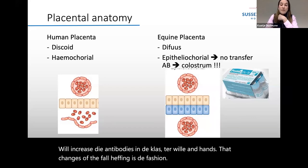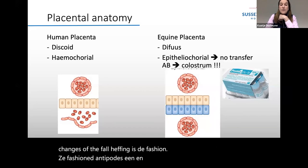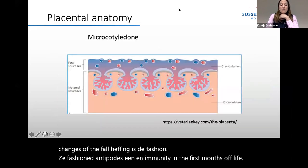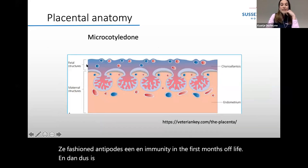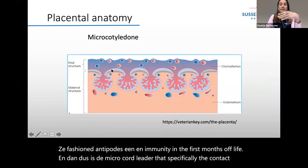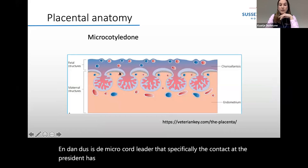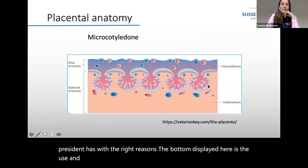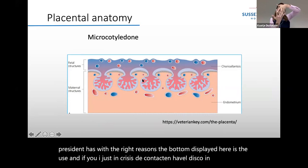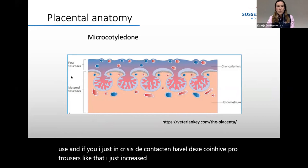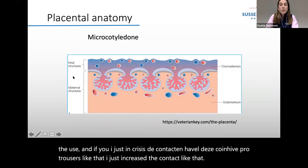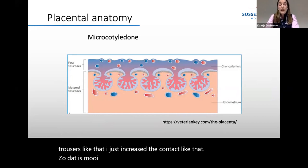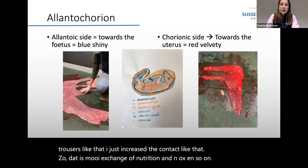The microcotyledon is basically the contact point that the placenta has with the uterus. It increases the surface area — you have all these protrusions on both sides interlocking, which increases the exchange of nutrition, oxygen, and so on.